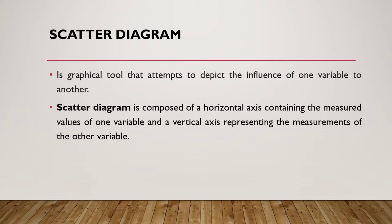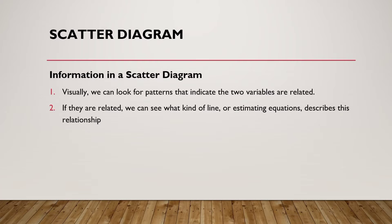The scatter diagram has a vertical axis representing the measurement of the other variable. In order to have a scatter diagram, we have two variables by which we will determine the relationship of one variable to the second variable.